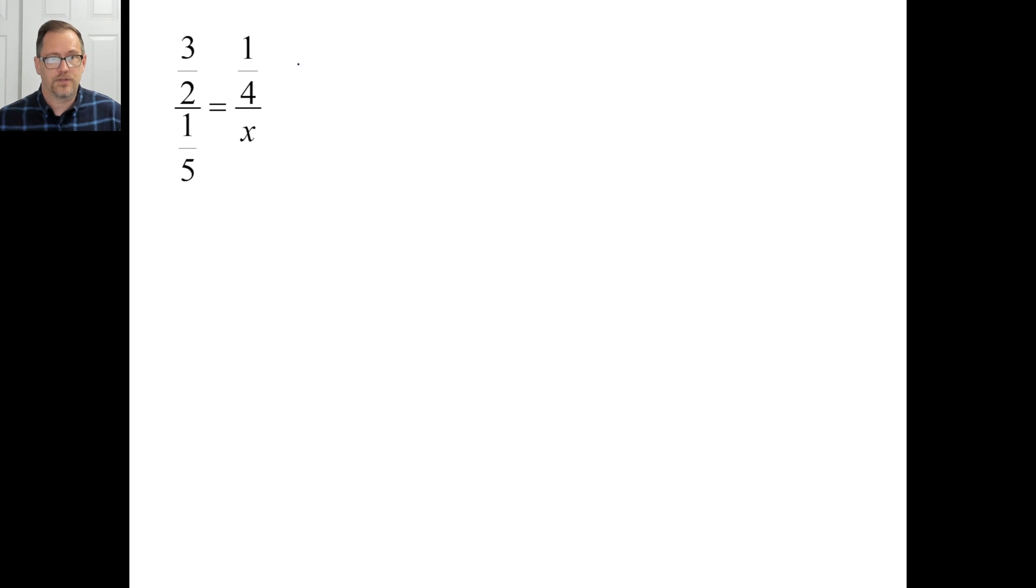Okay. Well, let's do it. 3 halves times x equals a fourth times a fifth. That's a 20th. So multiply both sides by two thirds. And that goes away. And then 2 over 20, that's 1 over 10. So x is 1 on top and then 30. There we go. That's it. All right. Let's try B. Pause it and try B.